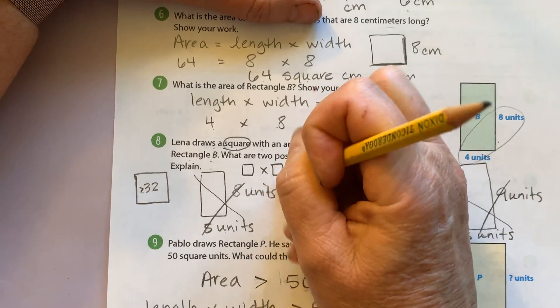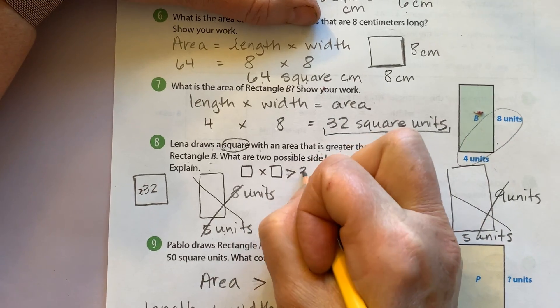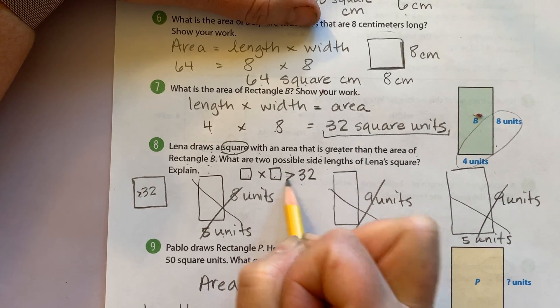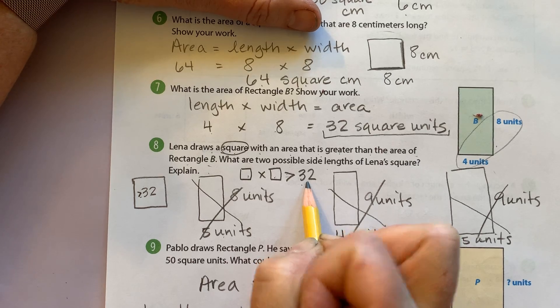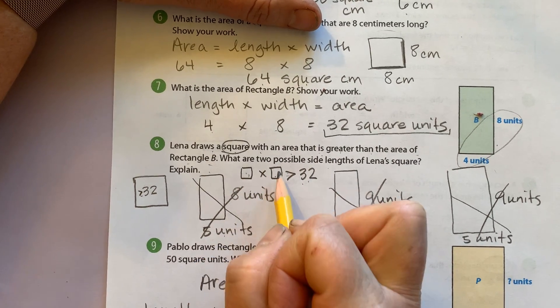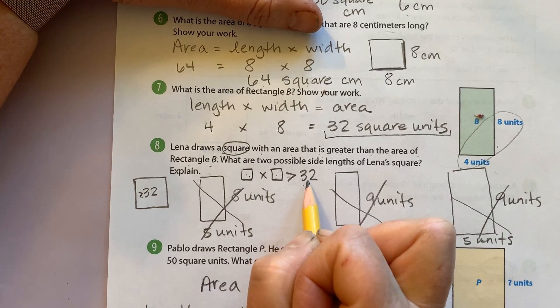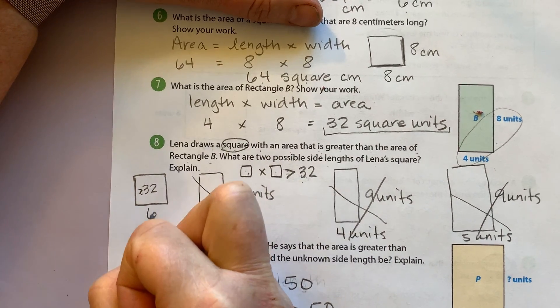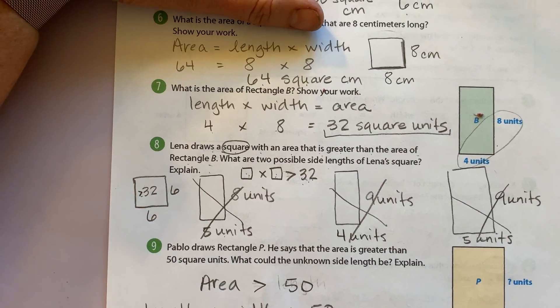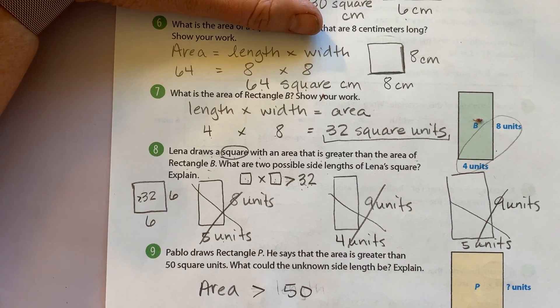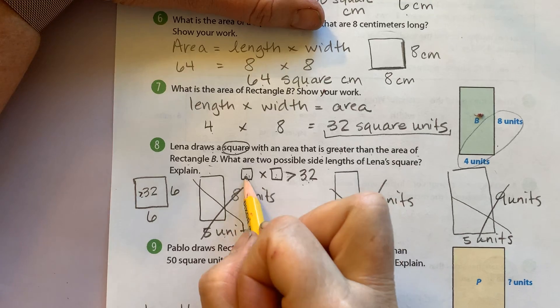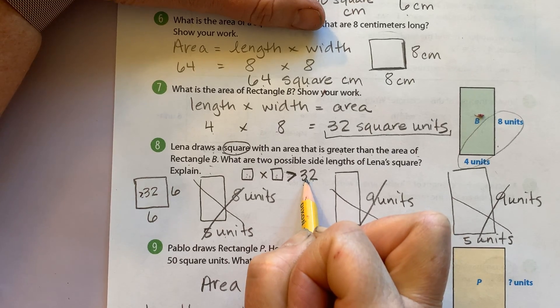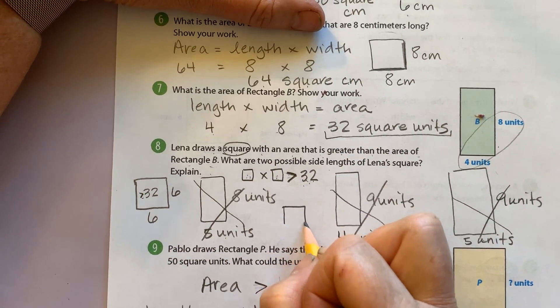So a number times itself has to be greater than 32. So what if I put five in there? Five times five is 25. Is that larger than 32? Nope. What if I put six in there? Six times six is 36. Is 36 greater than 32? It is. So I could have six as my sides. What's another number I could have? Well, since six worked, is seven going to work? Let's try it. Seven times seven is 49. Is 49 greater than 32? It is. So I could have a square that's a seven by seven.